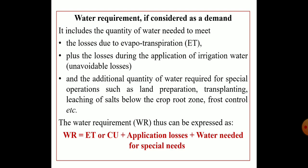Crop water requirement can be considered in two ways: in terms of demand or in terms of supply. In terms of demand, it includes the quantity of water needed to meet the losses due to ET (evapotranspiration) — the loss of water in vapor form from vegetation as well as the soil, which is the sum of evaporation plus transpiration — plus the unavoidable losses during the application of irrigation water.